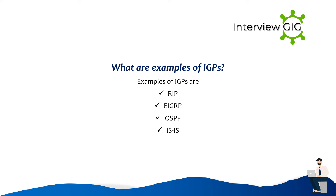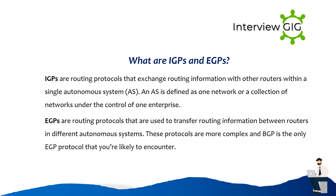What are examples of IGPs? Examples of IGPs are RIP, IGP, OSPF, and IS-IS. What are IGPs and EGPs? IGPs are routing protocols that exchange routing information with other routers within a single autonomous system. An AS is defined as one network or a collection of networks under the control of one enterprise. EGPs are routing protocols used to transfer routing information between routers in different autonomous systems. BGP is the only EGP protocol you're likely to encounter.